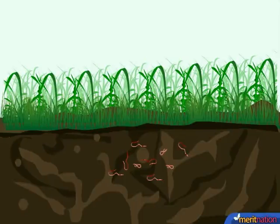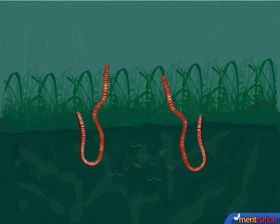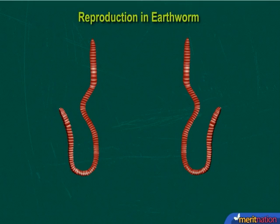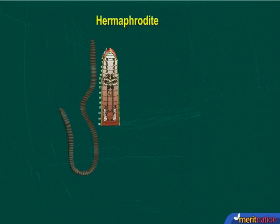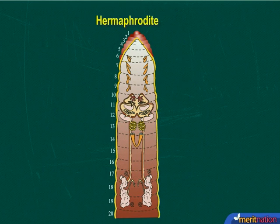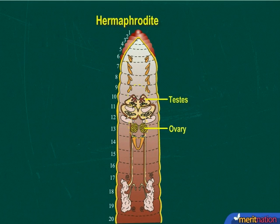Let us study the male and female reproductive system of earthworm and try to understand the process of reproduction in them. Earthworms, as we all know, are hermaphrodites with complex male and female reproductive organs present in each individual.